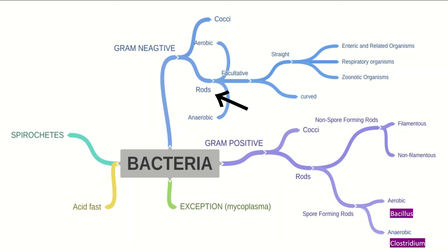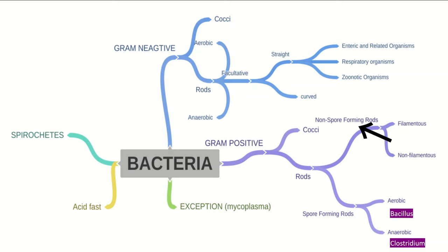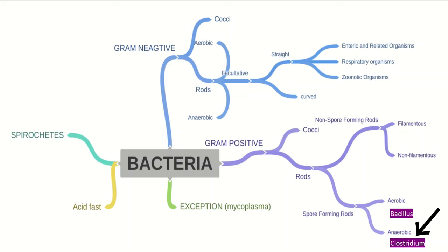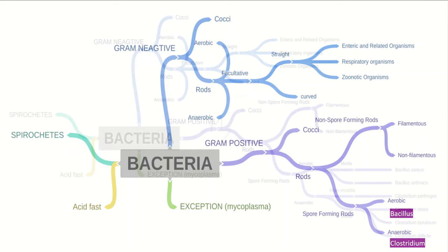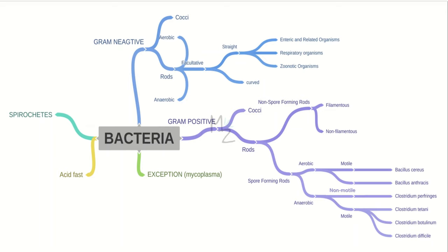Let's talk about gram positive bacterial classification. They're further classified into cocci and rods. Rods are subdivided into not spore-forming and spore-forming rods. Spore-forming rods are further classified into filamentous and non-filamentous, while the spore-forming rods are further classified into aerobic — for example, Bacillus — and anaerobic — for example, Clostridium. Both are further classified into motile and non-motile.